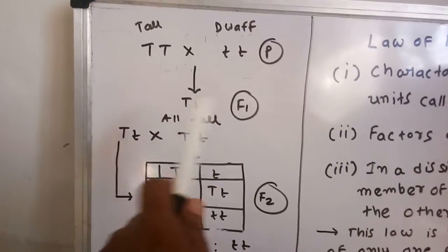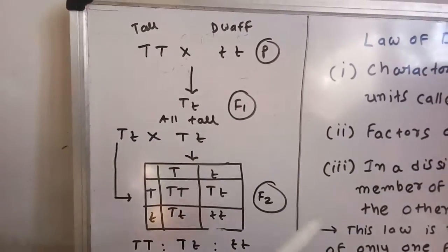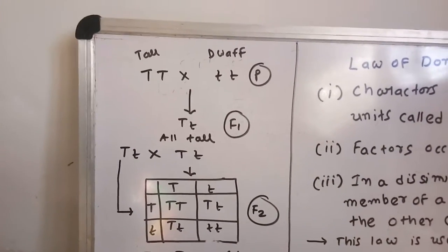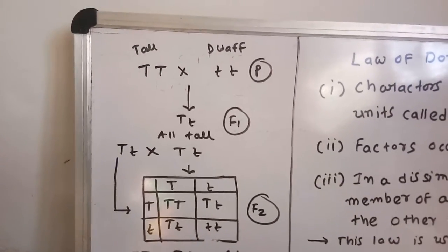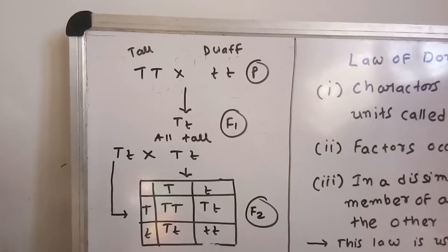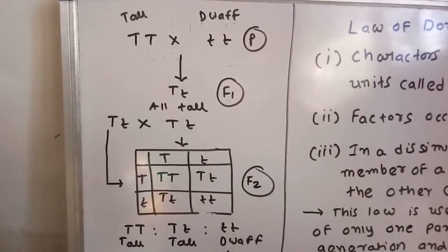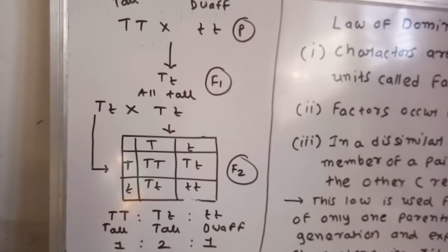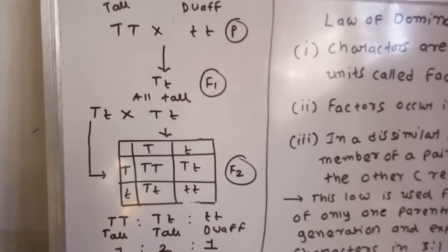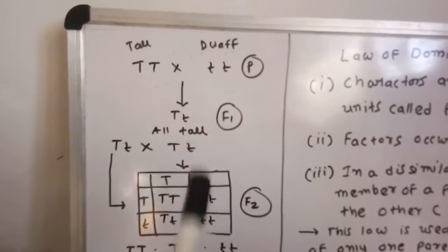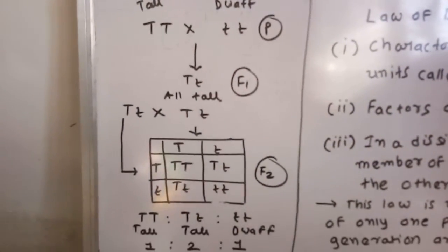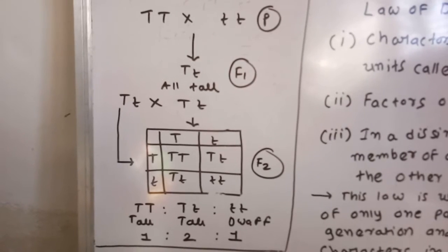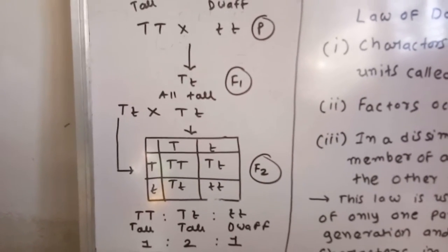Then one member of a pair dominates the other member. Here, capital T is dominating small t. Why do we say that? Because when capital T and small t are the genotype, the phenotype in F1 shows all plants are tall — capital T can express, small t cannot express. So we say that in a pair of dissimilar factors, one member dominates the other. That dominating member is called the dominant factor or dominant gene, and the other factor is called the recessive gene. Here, capital T is dominant over small t. In the F2 generation with capital T and small t, the phenotype expressed is tallness — that means capital T is dominant over small t.